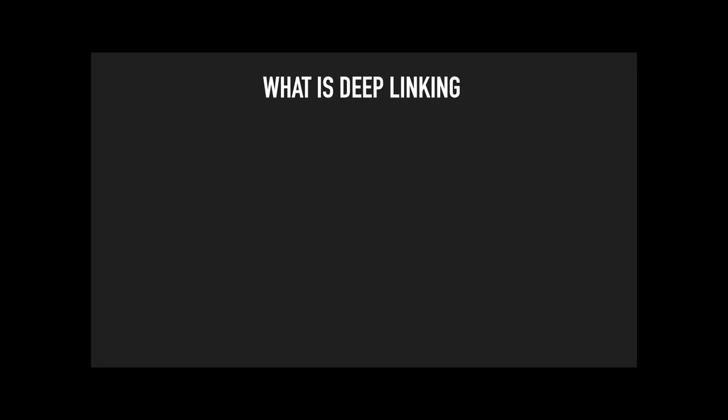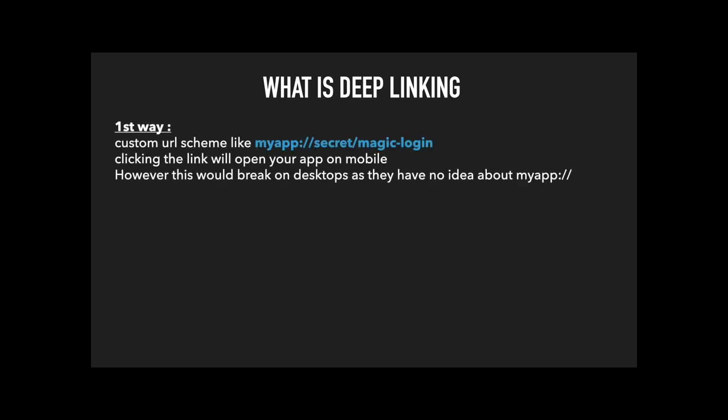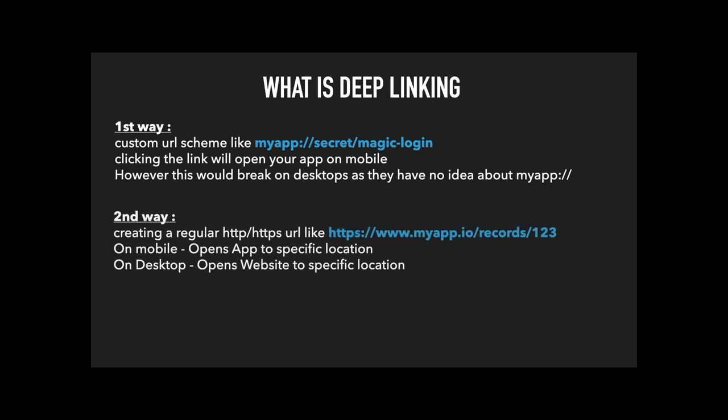There are basically two ways of deep linking into your app. The first is using a custom URL scheme, like 'myapp://' followed by a certain URL. Clicking on this link will open your app on mobile, but it would break on desktops since desktops have no idea about that custom scheme. The second way is to create a regular HTTP or HTTPS URL.